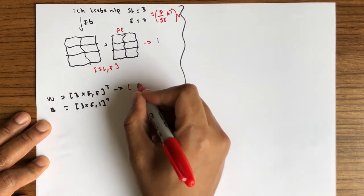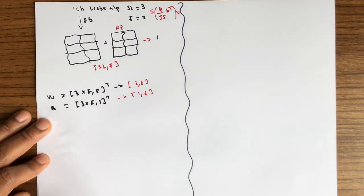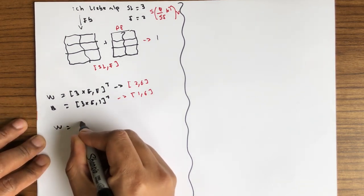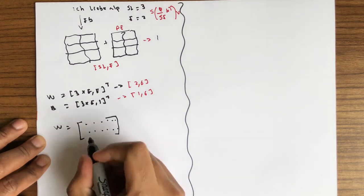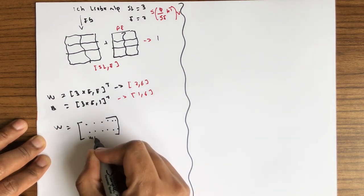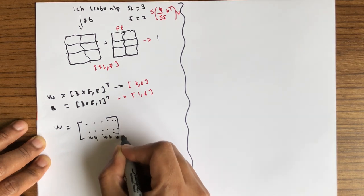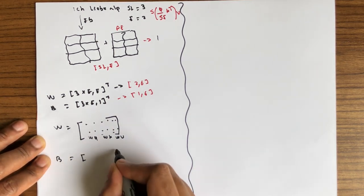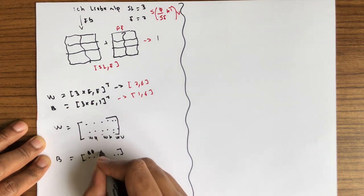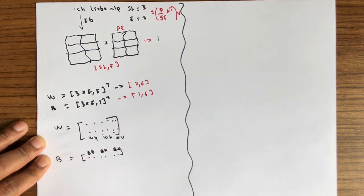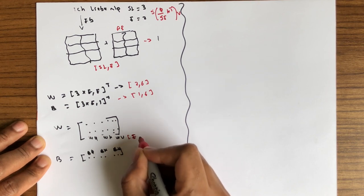W is a tensor where one part is W related to query, one part is W related to key, and one part is W related to V. B is similarly structured: one part is b related to query, one is b related to key, and one is b related to V. Each of these weight sub-matrices has a dimension of e by e.